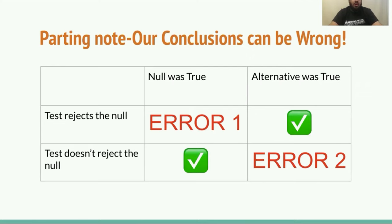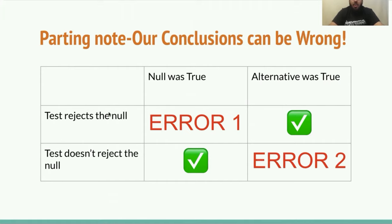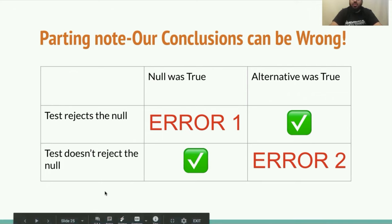Our conclusions can actually be wrong. In any statistical analysis we have to account for error. If the null was in fact true but due to our sample we ended up rejecting it, that would be an error. If we reject the null and the alternative was true, that wouldn't be an error — that's when we get it right. If the test doesn't reject the null and the null is true, we're doing it right. But if the test doesn't reject the null and the alternative was true, that's another error. These are the two kinds of errors you might see.